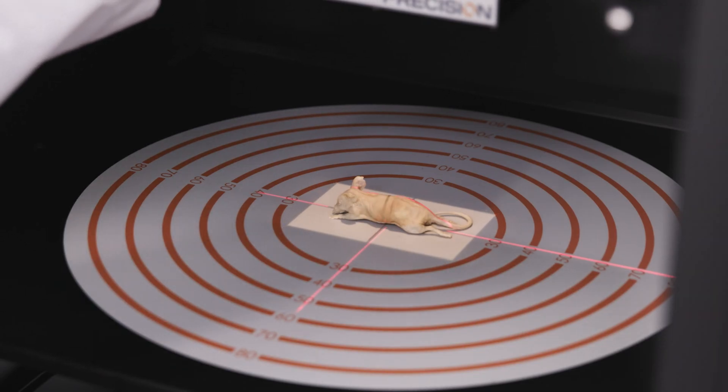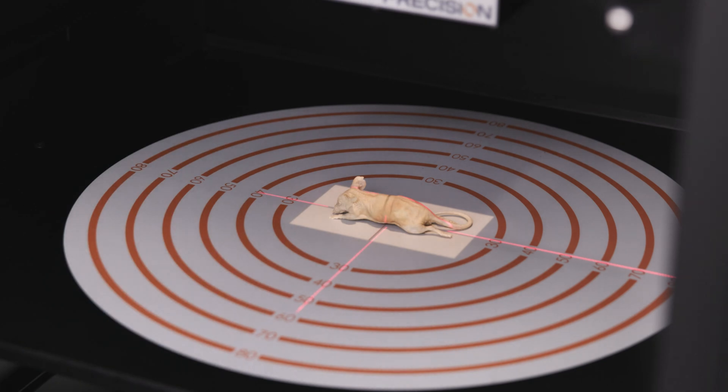Additionally, a laser crosshair aids users to easily find the center of the irradiation field. The X-RAD is the only system that can irradiate up to 33 mice at one time.